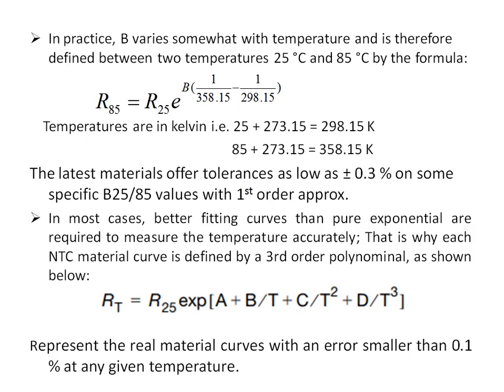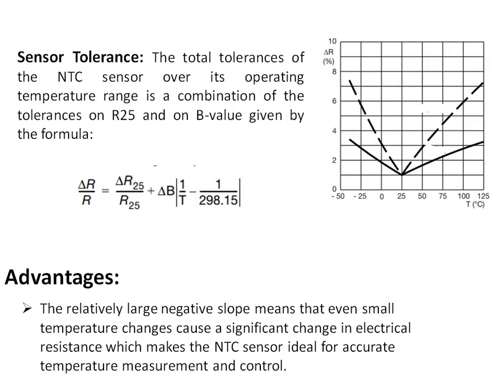For more accurate measurement, the Steinhart–Hart polynomial can be used: R_T = R_25 · e^(a + b/T + c/T² + d/T³). With this approximation, tolerances of plus or minus 0.1% or even less can be achieved. The coefficients a, b, c, and d are material constants that depend on the type of thermistor being used.